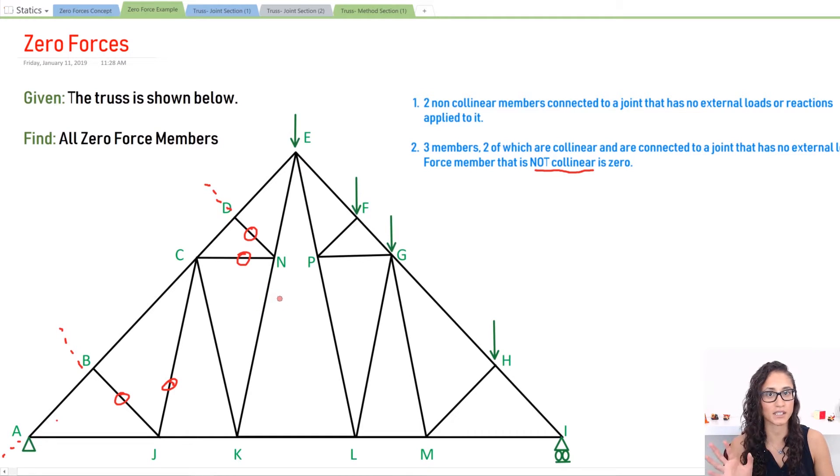It's the same thing guys. Once you get it, it just really starts being tedious. Now let's look at joint C. At C, I have CN is zero, CJ we identified as zero. I have three members left: CB, CD, and CK. Again, CK is the non-collinear member, so CK is going to be zero.